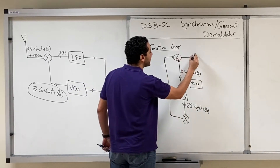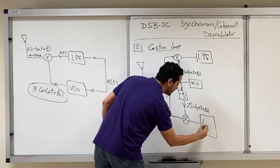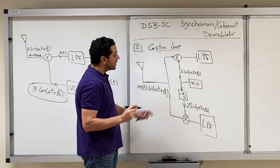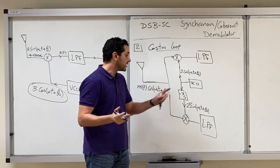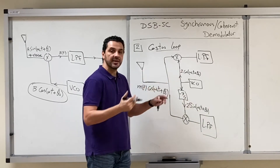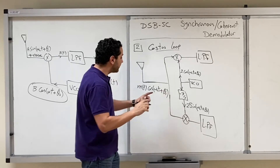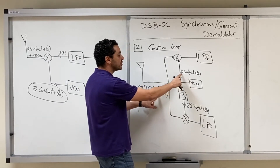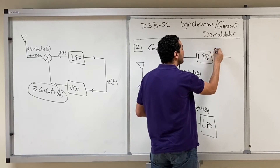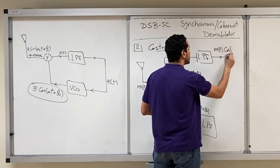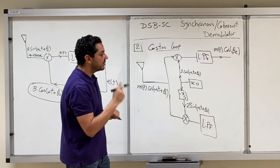Both products are passed through a low-pass filter. For the upper branch, multiplying cos times 2·cos gives half of the cosine of the sum — a high-frequency component at 2ωc that does not pass — and half of the cosine of the difference. That difference is the error between the two phases, so the upper branch output is m(t)·cos(θ_error).